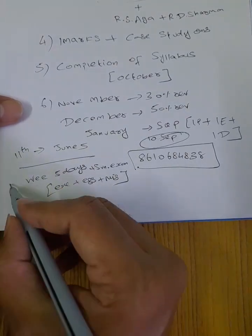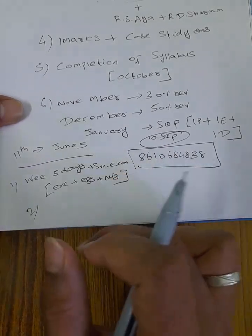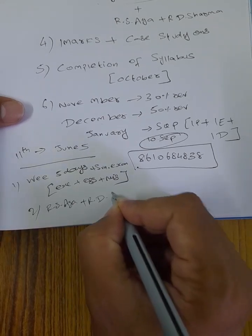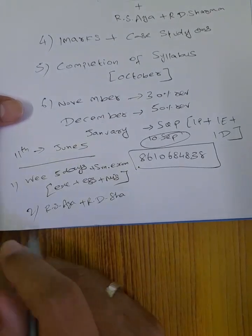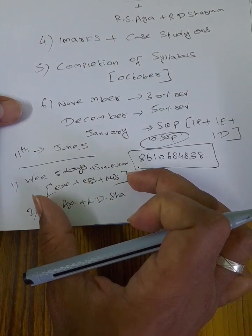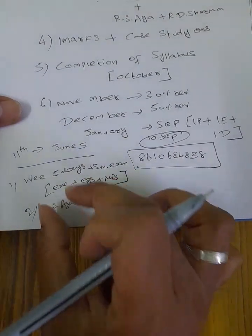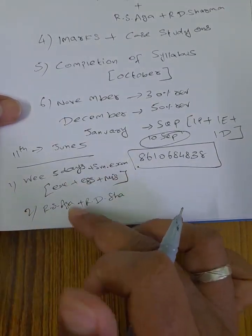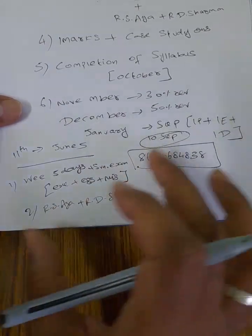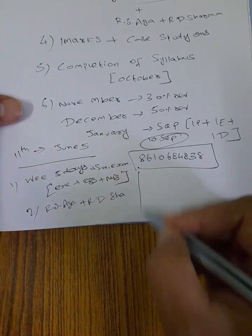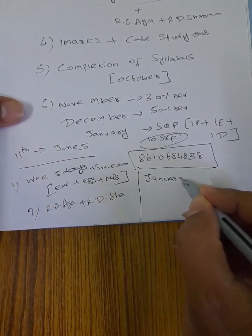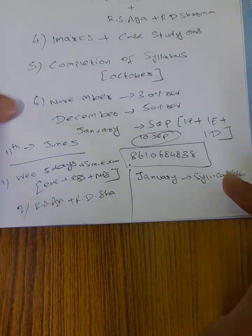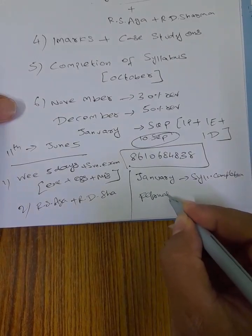If you want to get related questions, you can practice with some in-depth questions. This is a total exercise, top to bottom. Syllabus for 10th and 12th is completed. In June, when you have completed the syllabus total, you will complete the syllabus in January. January syllabus completion is completed; we will complete the 12th syllabus in February.